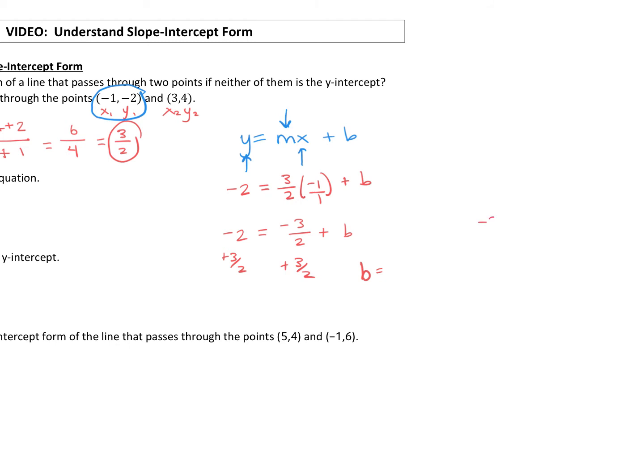And our b value, which is our y-intercept, is equal to a negative 2 plus 3 halves. So let me just show you that fraction work off on the side. You have a negative 2 over 1 plus a 3 over 2. Anytime you add fractions, you need a common denominator. So I'm going to multiply this one by 2, so I get that 2 common denominator. And we get negative 4 over 2 plus 3 over 2. Now we can add those, negative 4 plus 3 is negative 1, and that common denominator stays the same. So our b value is a negative 1 half.